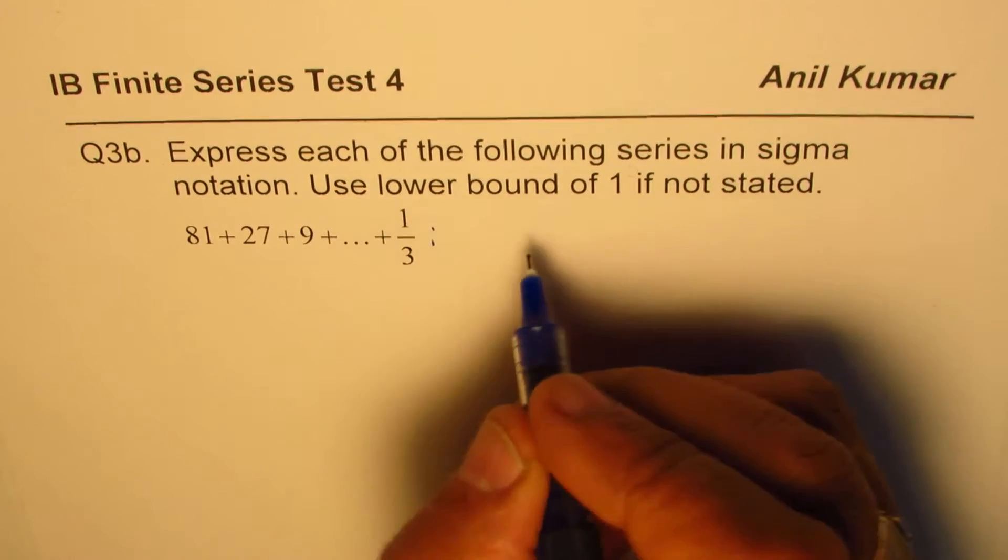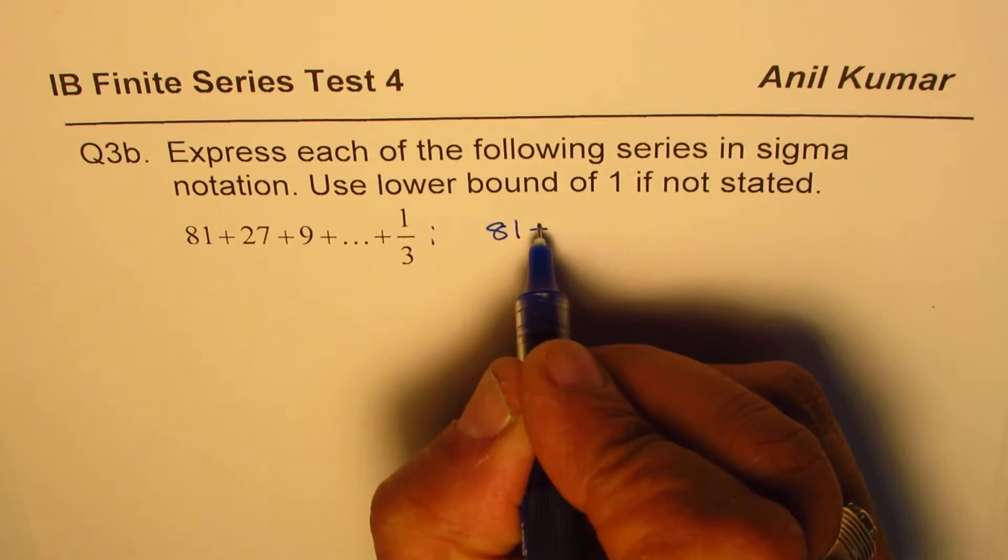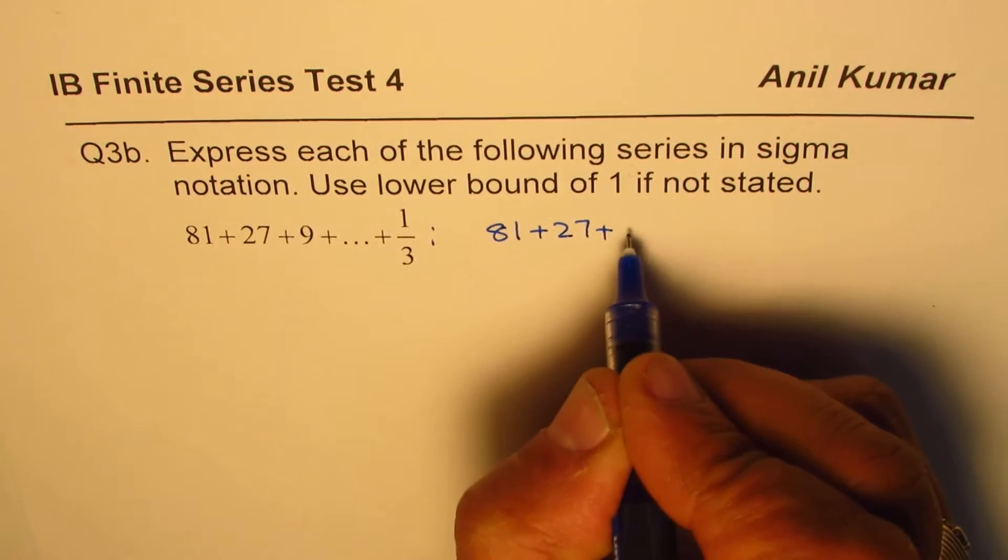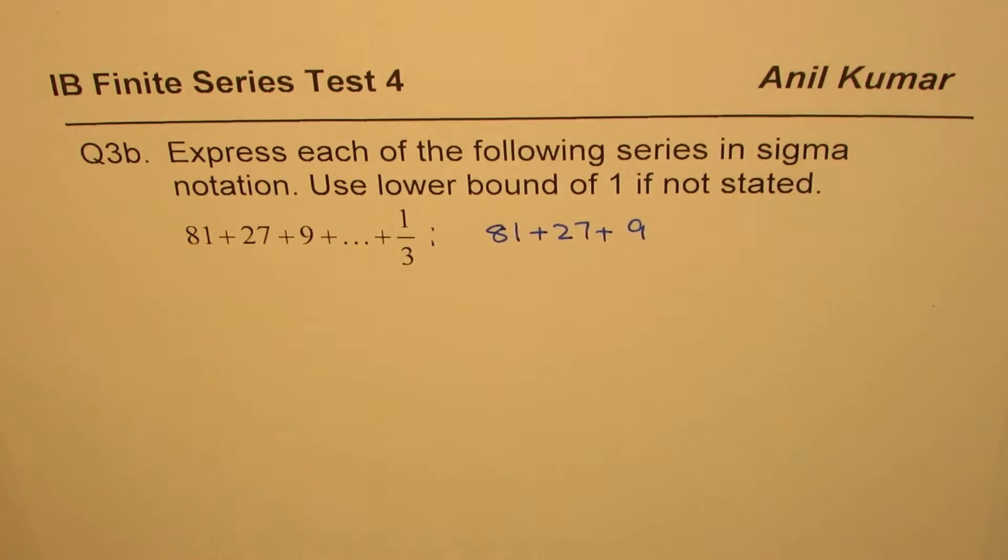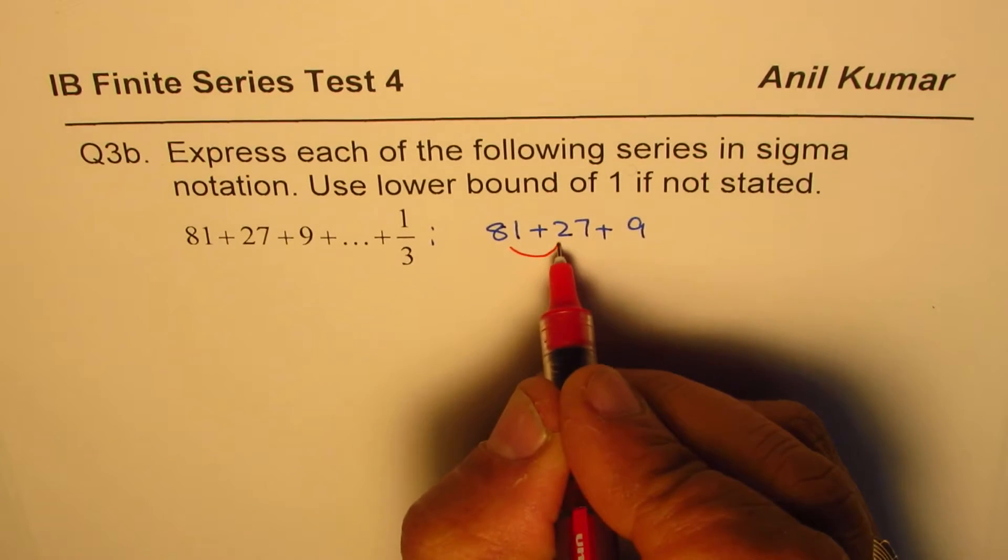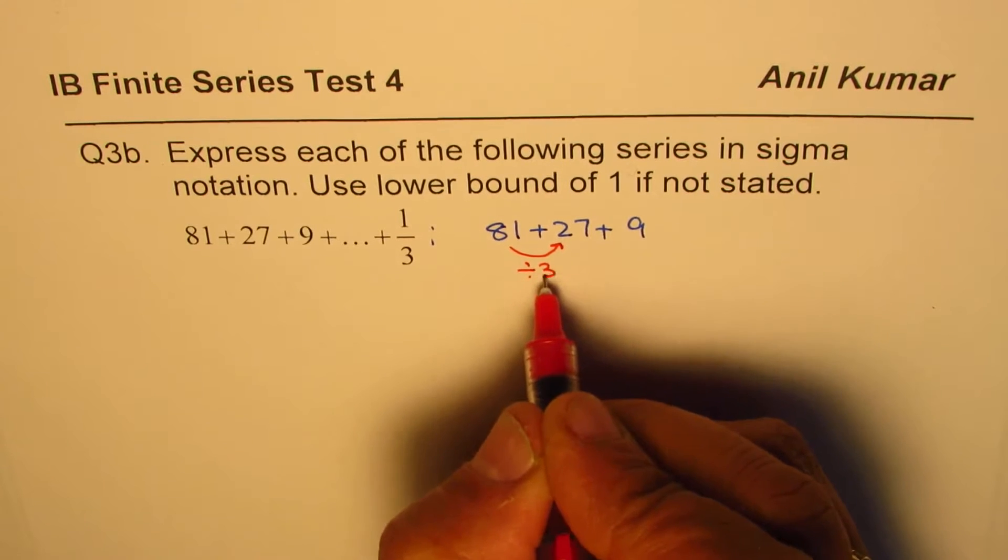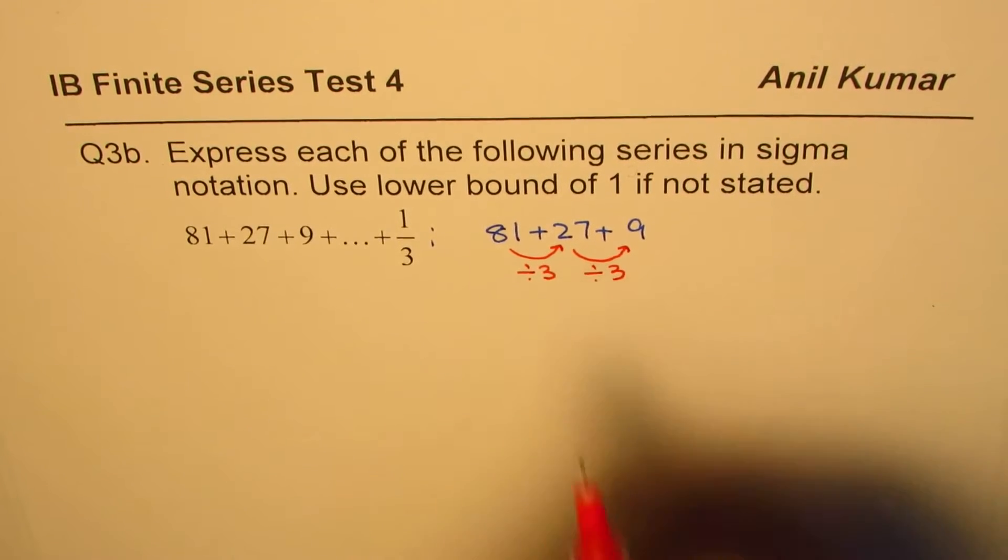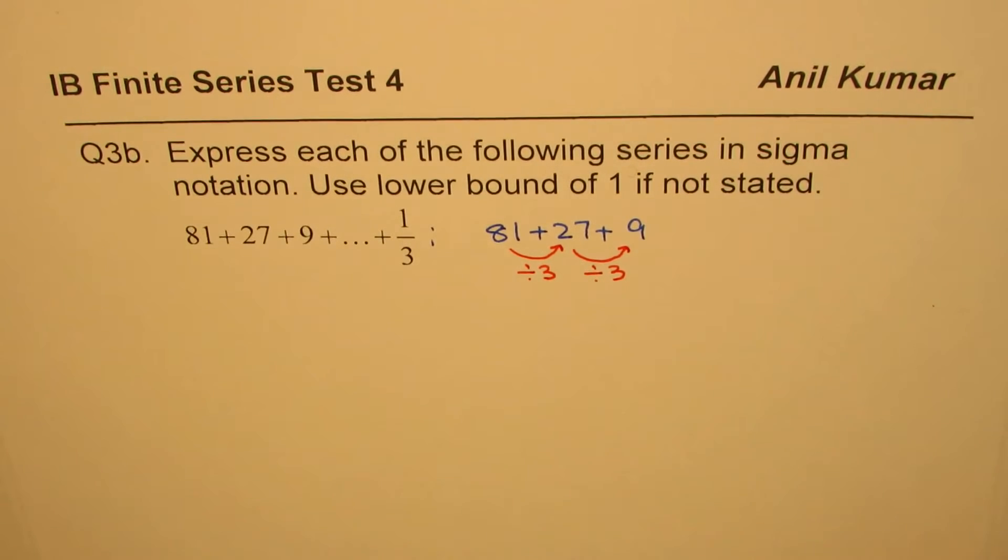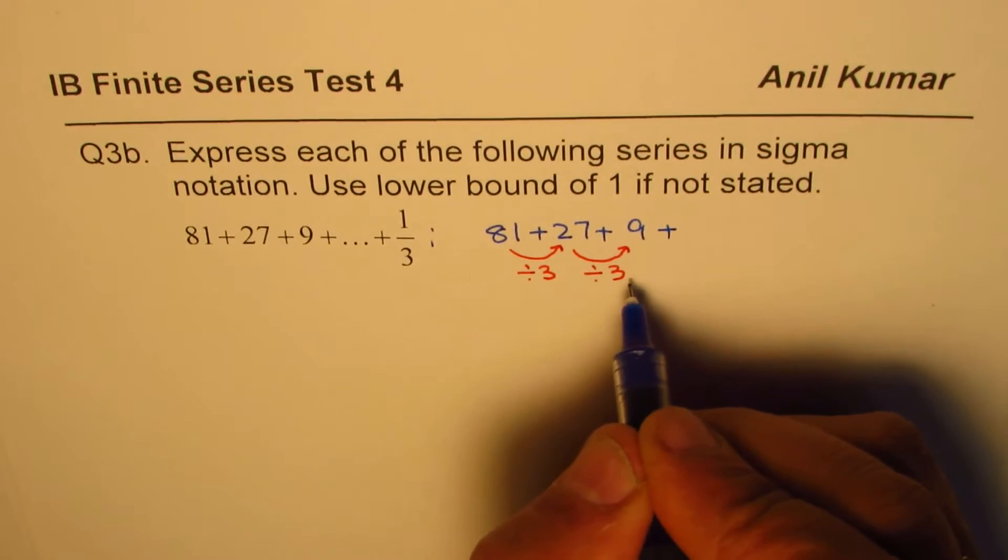Let me continue this series. We know it is 81 plus 27 plus 9. So moving from 81 to 27, what are we doing? We are dividing by 3. So we are dividing by 3 and then again we are dividing by 3. It is clearly a geometric series where each number is divided by 3.